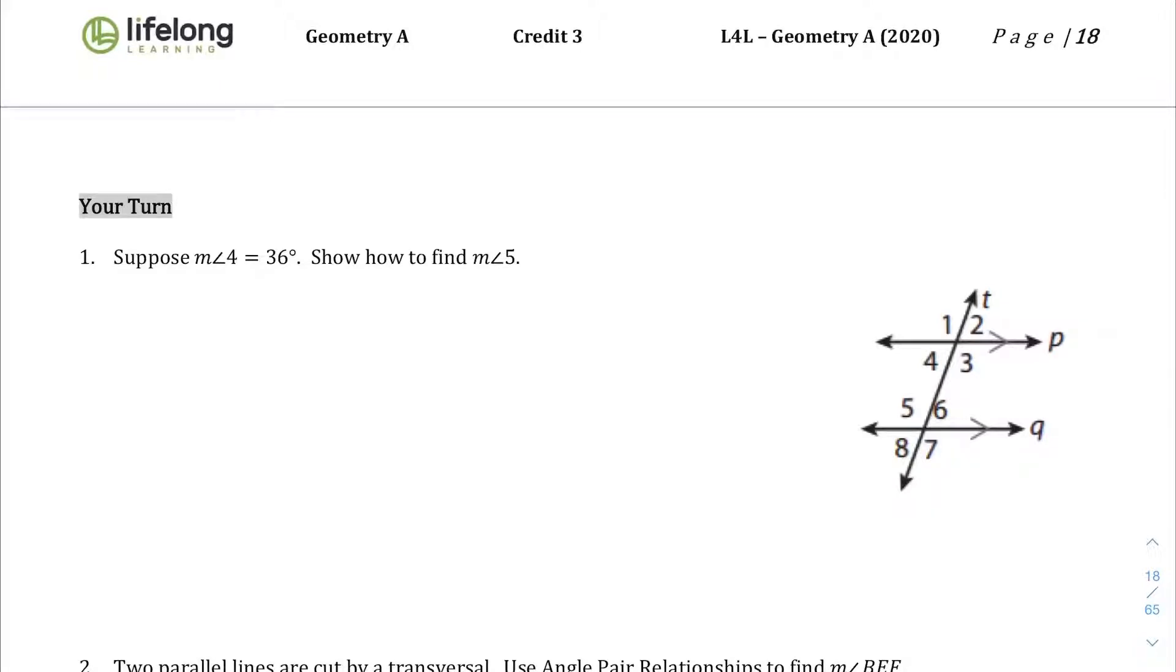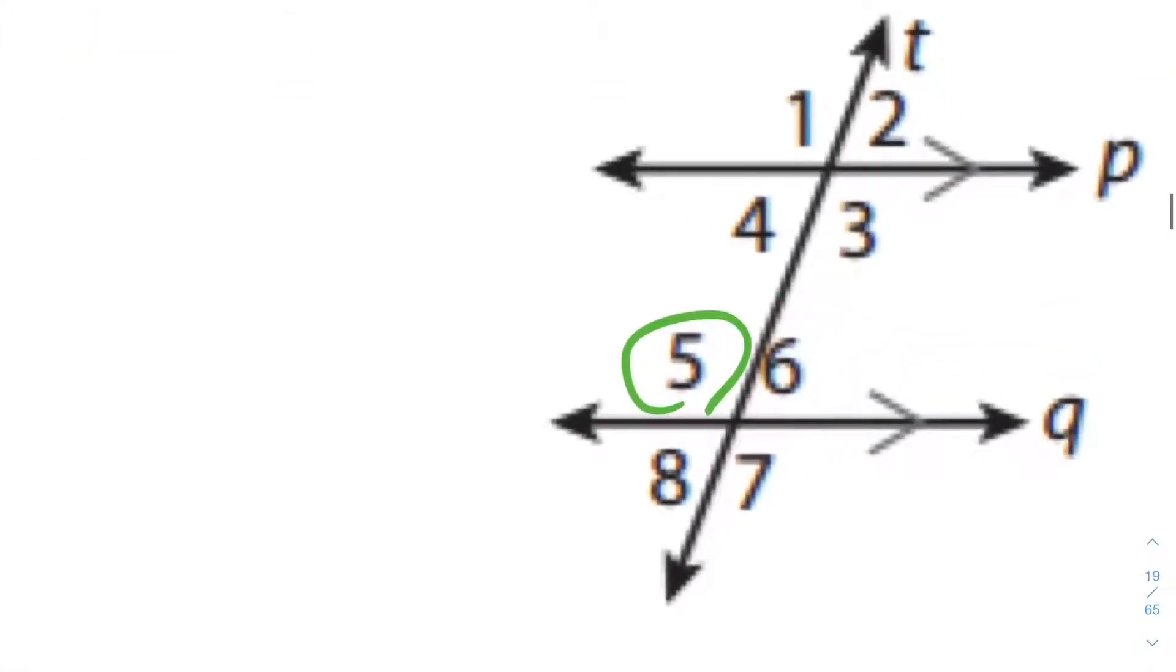Question number 1. We are told the measure of angle 4 equals 36 degrees and they want us to find 5. We are told 4 is 36 degrees.